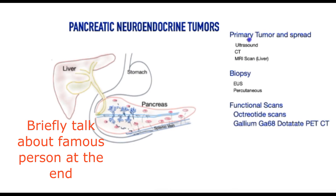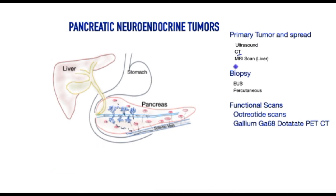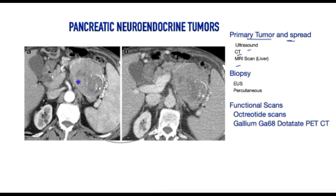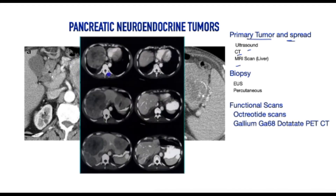Conventional scans such as CT, MRI, and ultrasound would conveniently locate the tumour as well as give evidence of its spread. This is a CT scan showing a large pancreatic tumour, probably non-functional, in the body and tail of the pancreas. This second CT scan shows spread to the liver — this is normal liver tissue, and these are tumour deposits from a pancreatic primary.